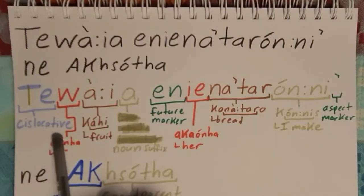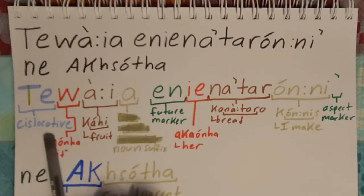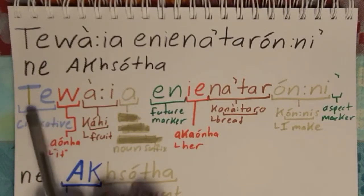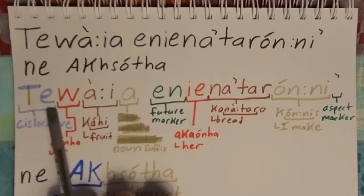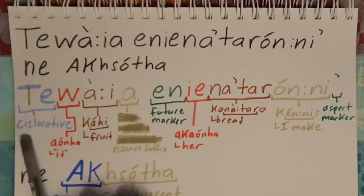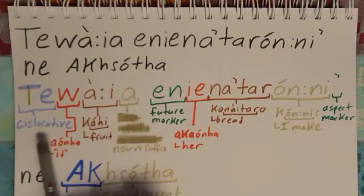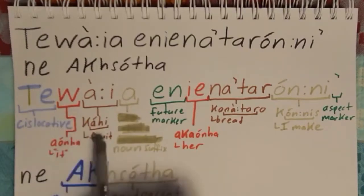It can also be used to say that something is in a fixed location — like 'my house.' That is the same exact 'De' right here, the cislocative, because your home is in a fixed location. So that's why this 'De' is here, and we'll come back to it when we get the full meaning of the word.